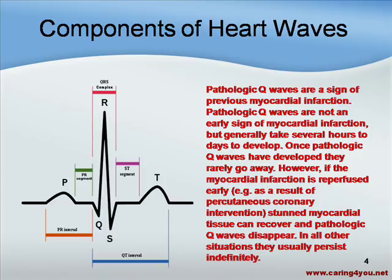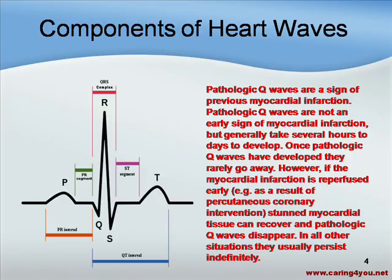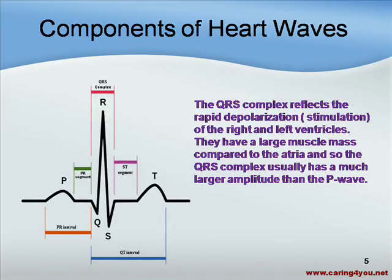Q waves are not an early sign of myocardial infarction but generally take several hours to days to develop. Once pathological Q waves develop, this is a sign of myocardial infarction. Once the Q wave goes past that baseline, this is evidence that a myocardial infarction has occurred. However, if the myocardial infarction is reperfused early — for example, as a result of a percutaneous coronary intervention — stunned myocardial tissue can recover and pathologic Q waves disappear. In all other situations, they usually persist. The P wave represents atrial activity; the QRS complex represents ventricular activity.